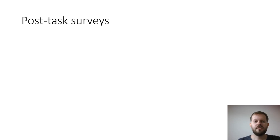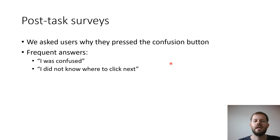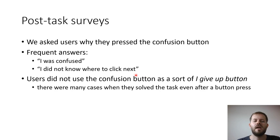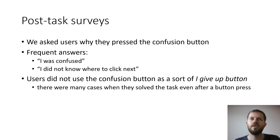In post-task surveys, we asked users why they pressed the confusion button. They reported pressing it because they felt confused or didn't know where to click next, suggesting they followed the instructions correctly. We also verified that users did not use the confusion button as an 'I give up' button — in many cases they solved the task even after pressing it. When they wanted to abandon a task, they used a different key.